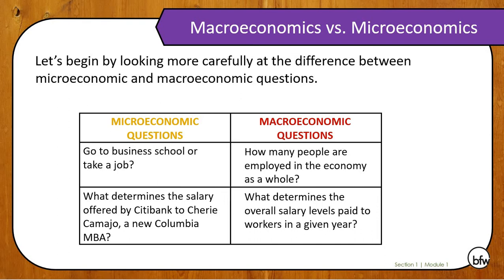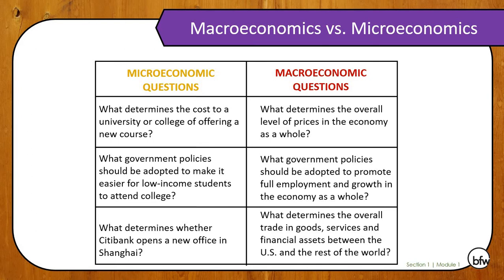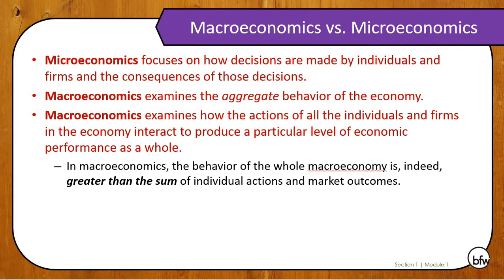There are more examples of questions you can look at. Microeconomics focuses on how decisions are made by individuals and firms — another word for businesses — and the consequences of those decisions. Macroeconomics focuses on the aggregate behavior of the economy and examines how the actions of all individuals and firms interact to produce a particular level of economic performance as a whole. Basically, what's going on in the entire economy and how do changes by governments or businesses as a whole impact the economy?